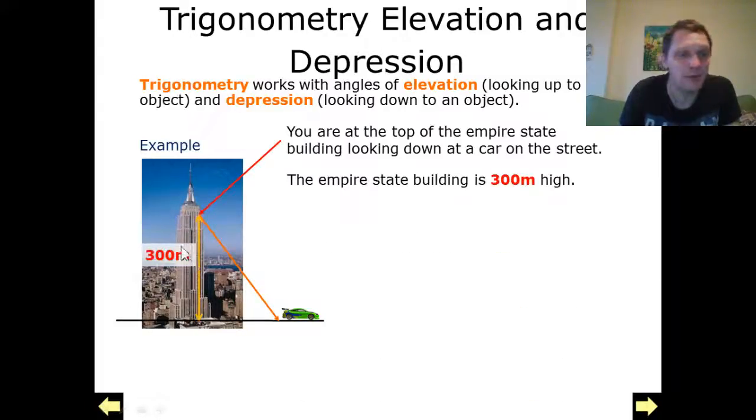The Empire State Building is 300 metres high and that's the point I am looking down at this car from. The car is 100 metres away from the base, and as you can see here, we've created a right angle triangle.